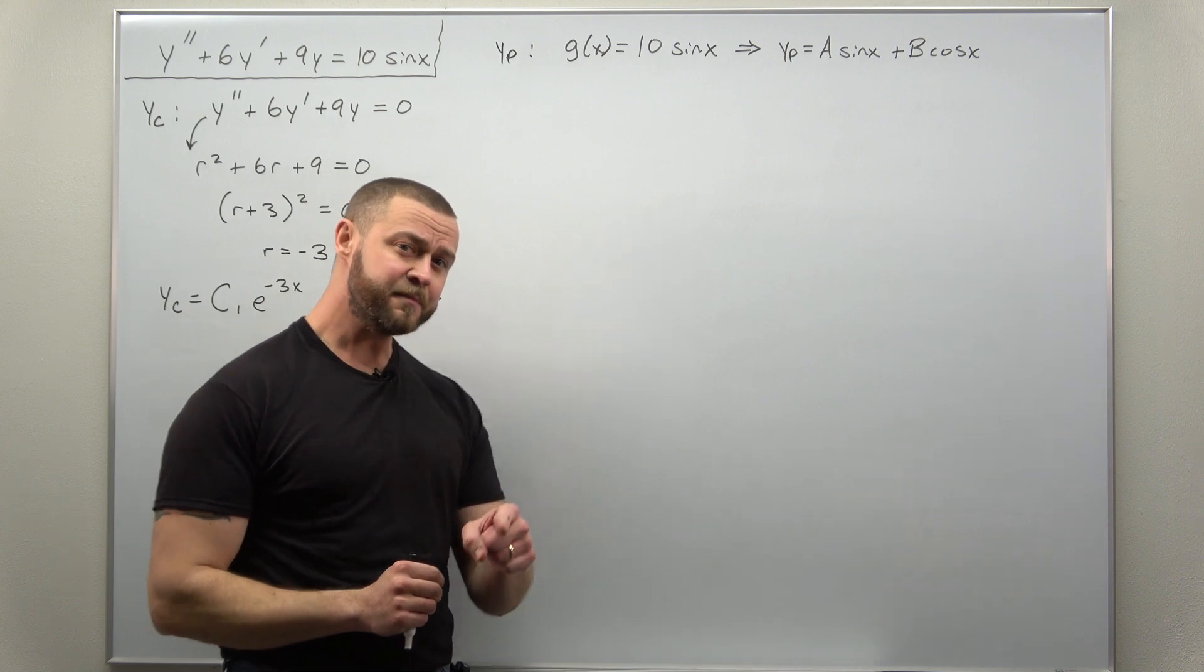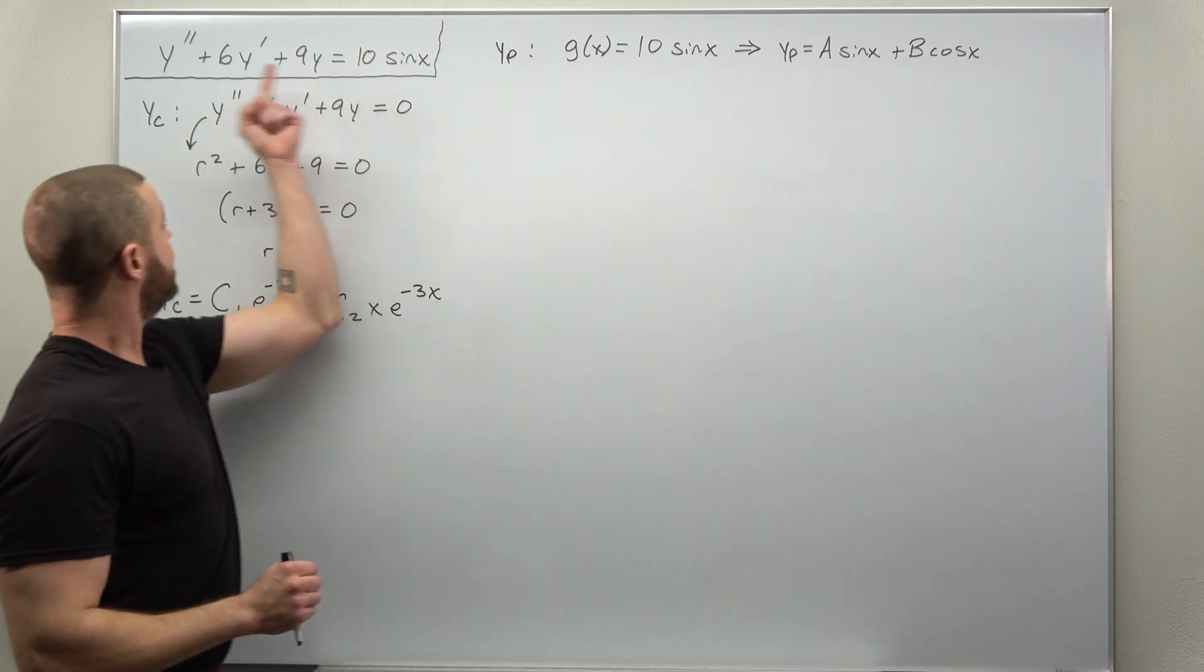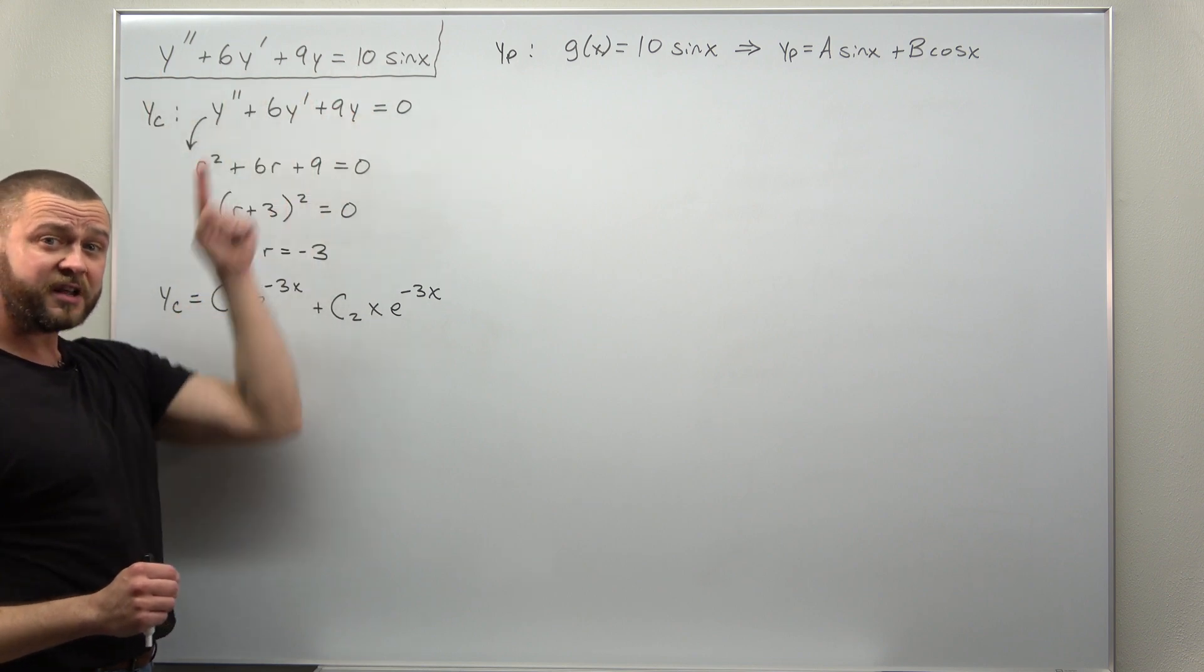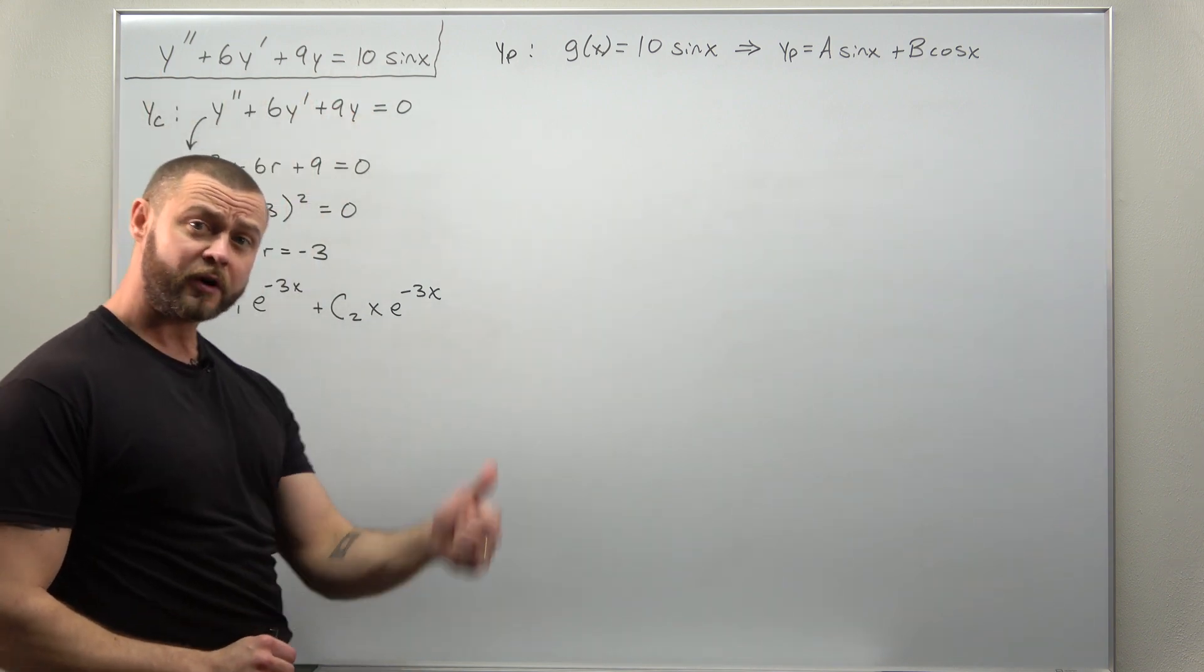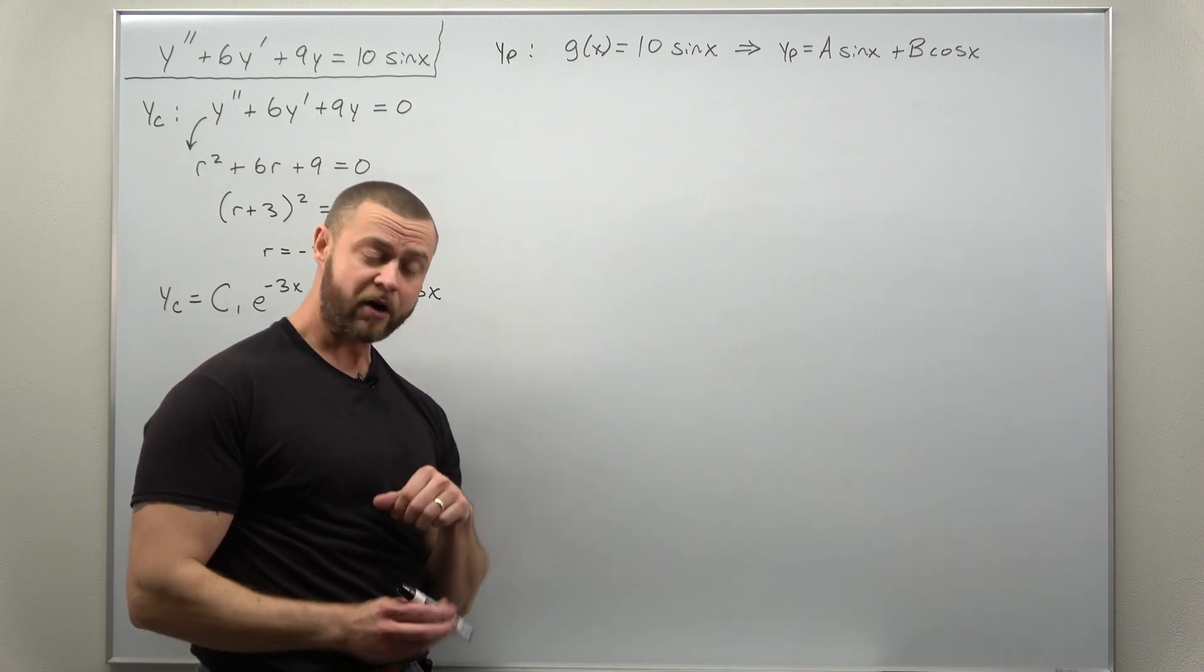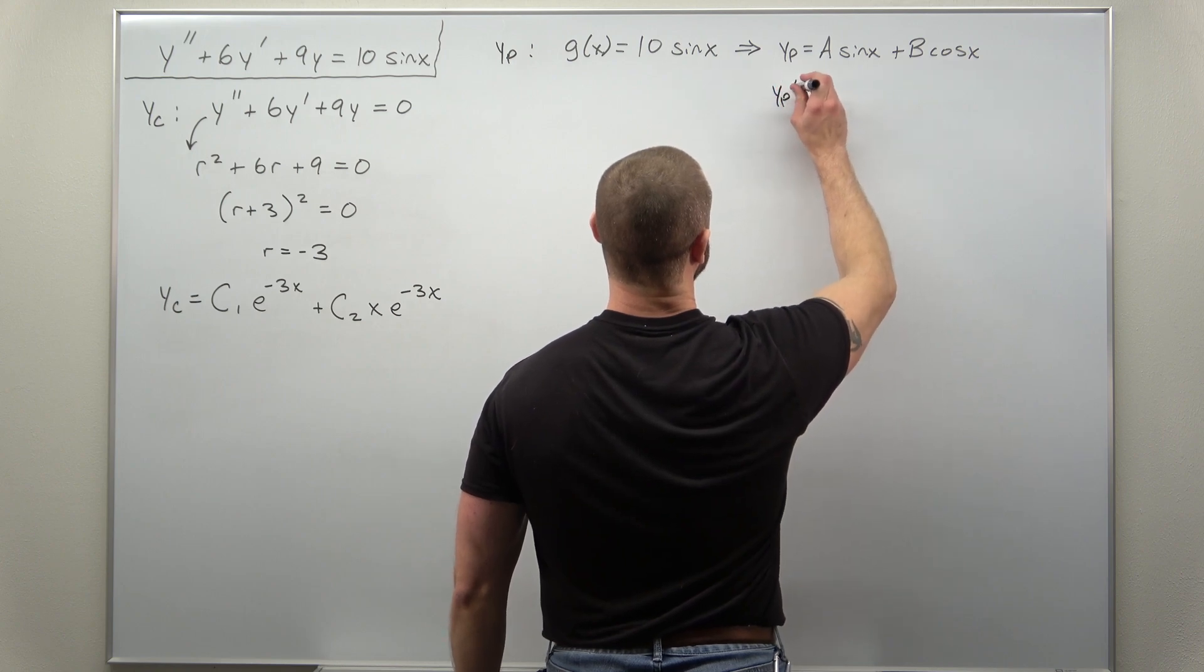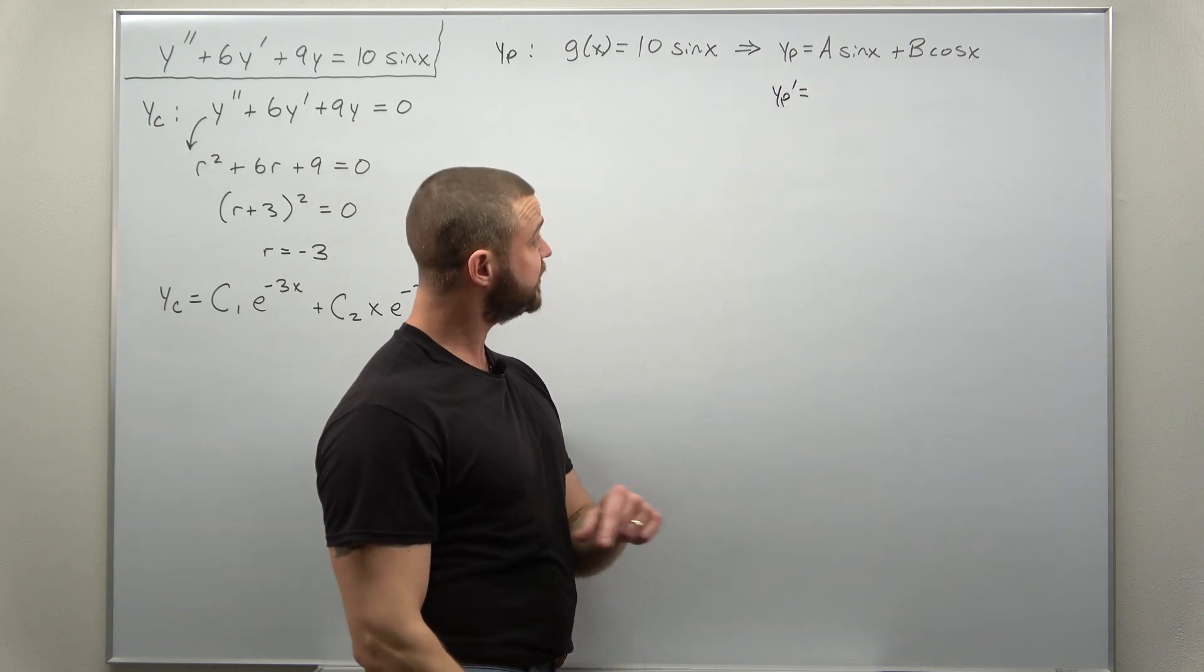Our goal is to solve for a and b by plugging this form for the particular solution back into the non-homogeneous ODE. But to do that, we're going to need the first and second derivatives. So let's go ahead and calculate those. That shouldn't be too bad. We just need our basic derivatives for sine and cosine.